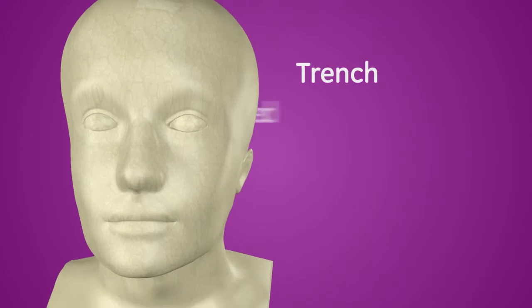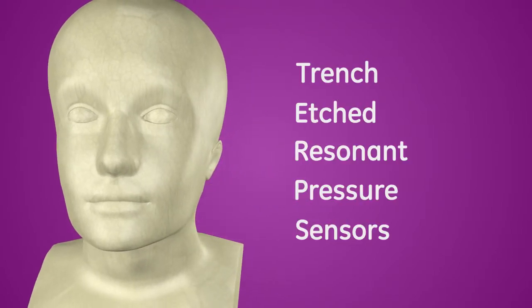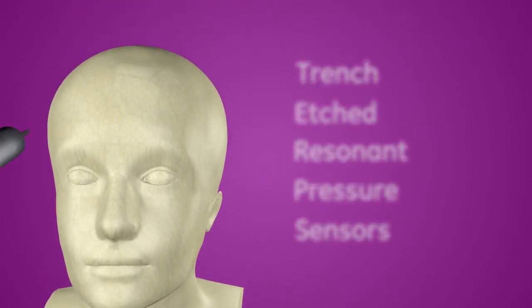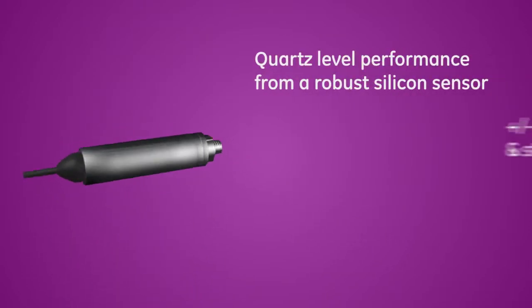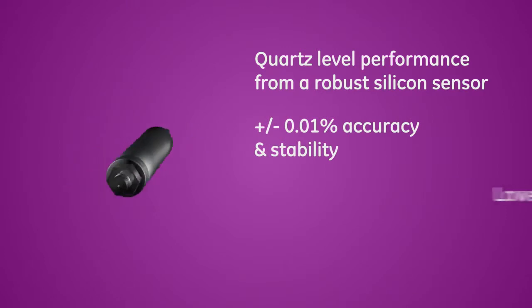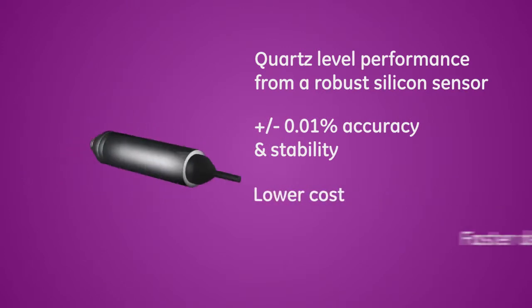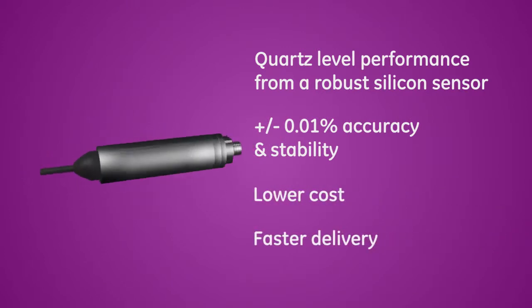TERPS stands for Trench Etched Resonant Pressure Sensors. A new pressure sensor technology from GE that provides quartz level performance from a robust silicon sensor at a significantly lower cost and with fast delivery times.